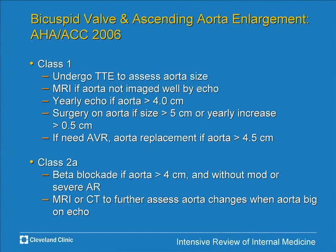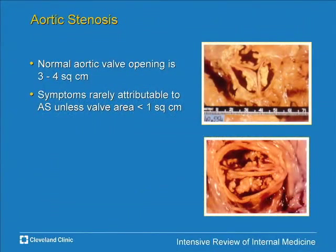Beta blockade is indicated as a Class 2A recommendation if the aorta is greater than 4 cm, to slow progression of aortic root enlargement. This is except in severe AR — by slowing heart rate, you lengthen diastole and may worsen the hemodynamic consequences of regurgitation. If you can't visualize the aorta well by echo, proceed with MRI or CT. That's all on congenital anomalies.